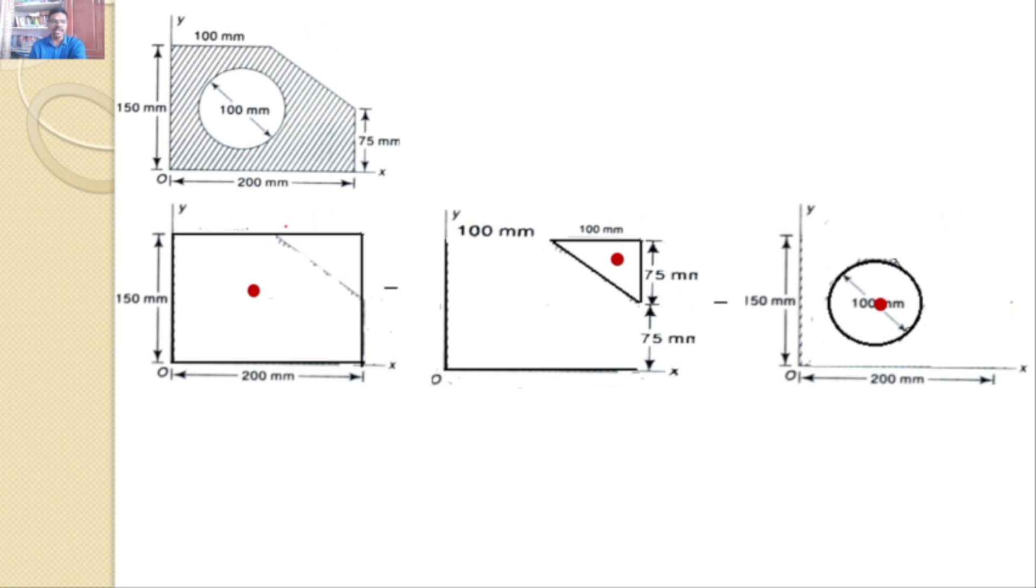Now I will calculate area and centroid for the rectangle, triangle and this circle. So first we consider this rectangle. The area is 200 into 150 which gives 30,000 mm squared. And the centroid is x1 equals 100 mm and y1 equals 75 mm.